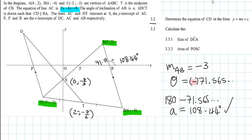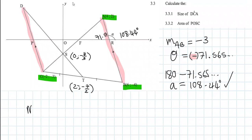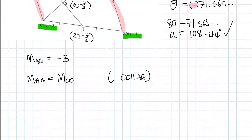Number 3.2: Determine the equation of CD in the form Y equals MX plus C. It was given that CD is parallel to AB. We already have the gradient of AB which is minus 3. So M_AB equals minus 3. And we know that parallel lines have the same gradient. So M_AB equals M_CD because CD is parallel to AB. This was given.